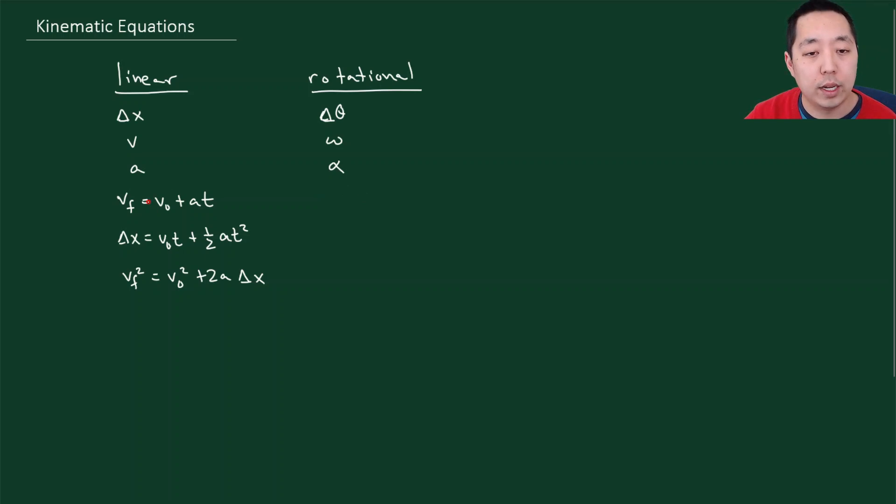So anyway, the rotational equivalent of these equations look like the final angular velocity is equal to omega 0 plus alpha t. You just replace all these variables with their corresponding one. delta theta is equal to omega 0 t plus 1 half alpha t squared. And we have omega f squared is equal to omega 0 squared plus 2 alpha delta theta. So we have completely analogous kinematic equations.